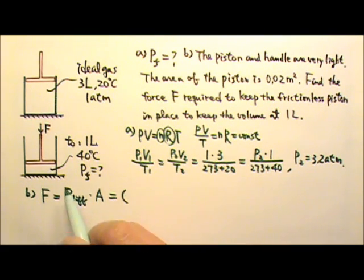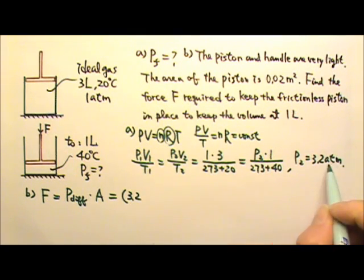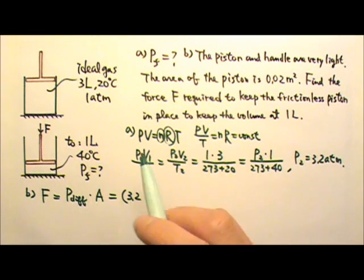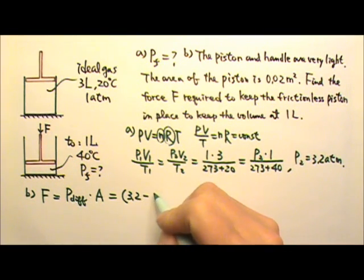The pressure difference between the inside and outside is 3.2 atmospheres. If the problem doesn't say, we will use 1 atmosphere, the standard value for the atmospheric pressure.